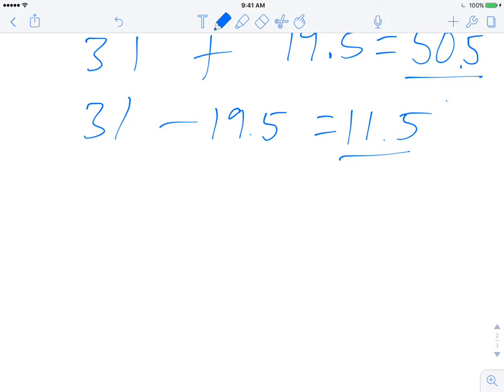If there were, then we would call them, basically we just have upper outliers and lower outliers to look for.